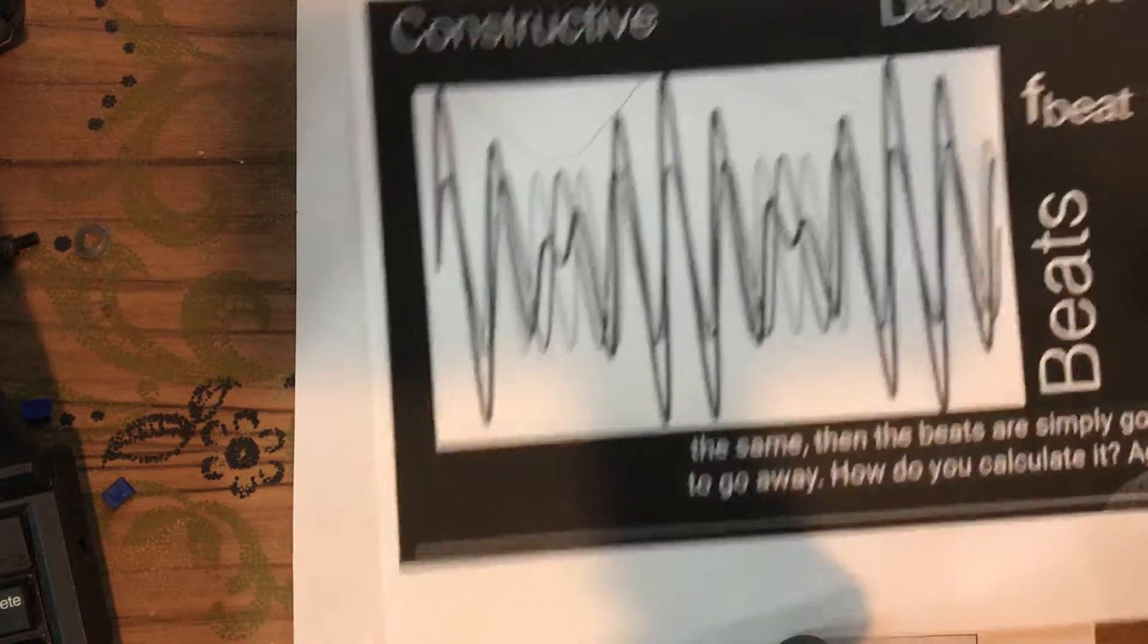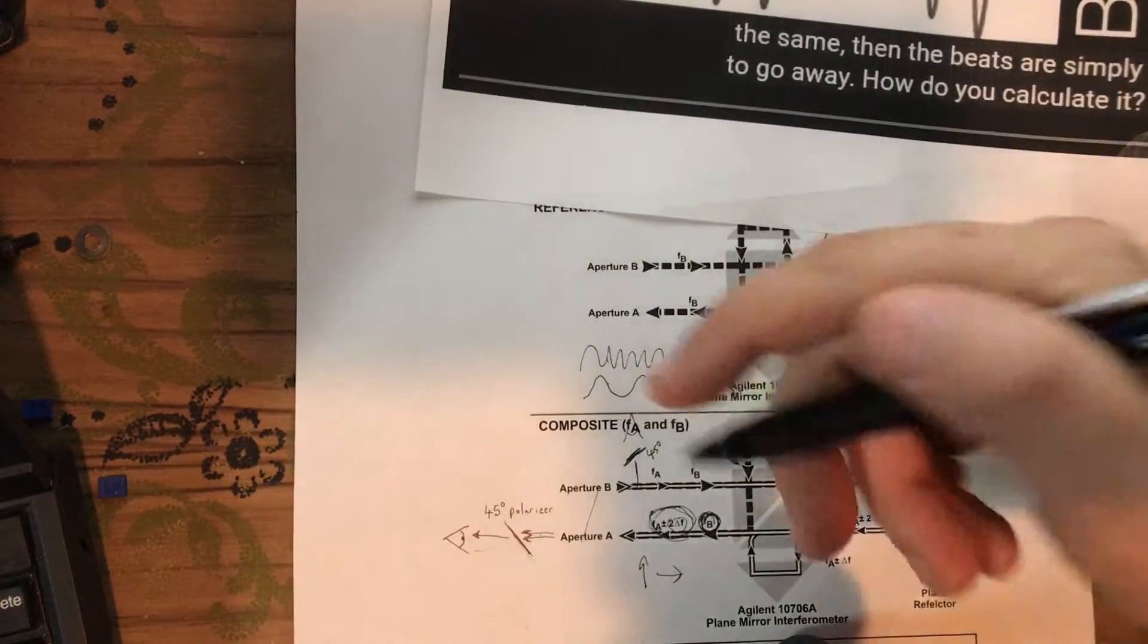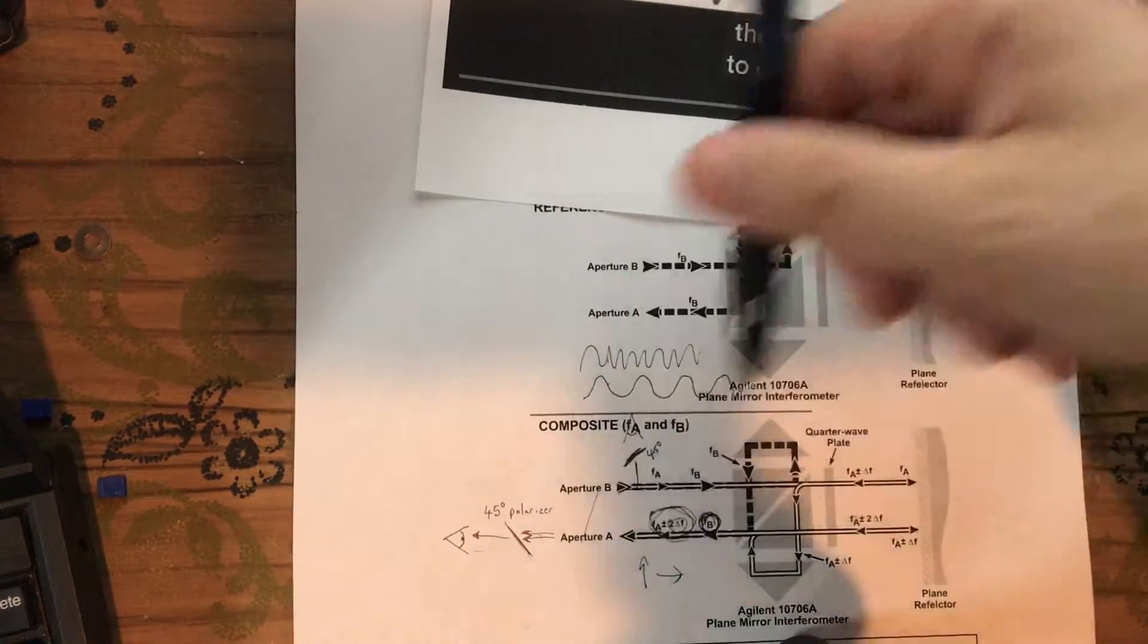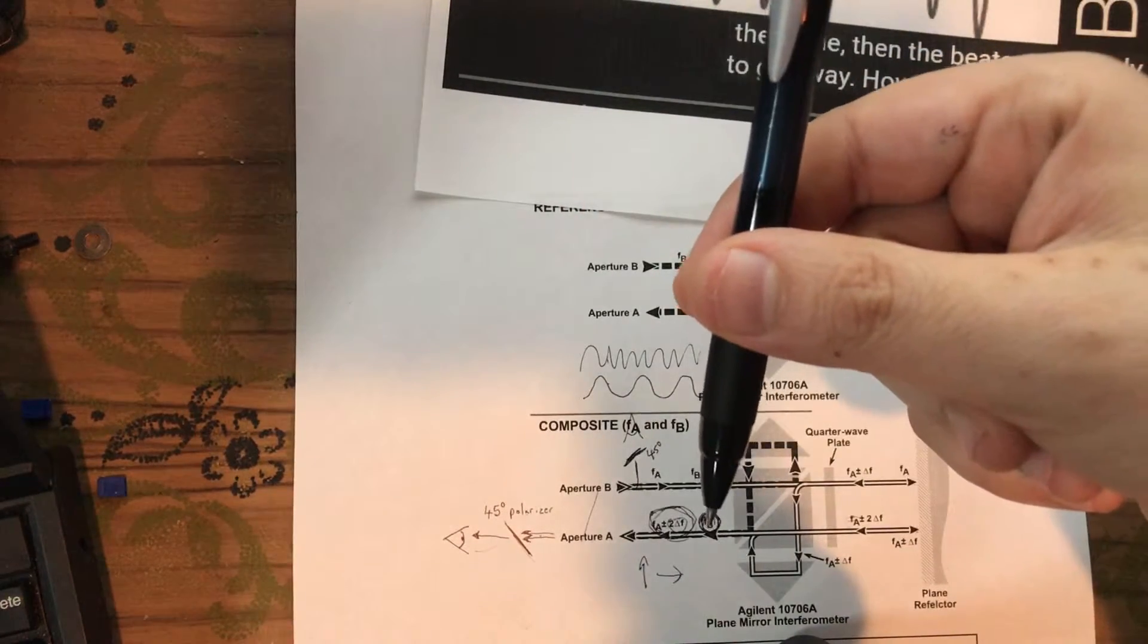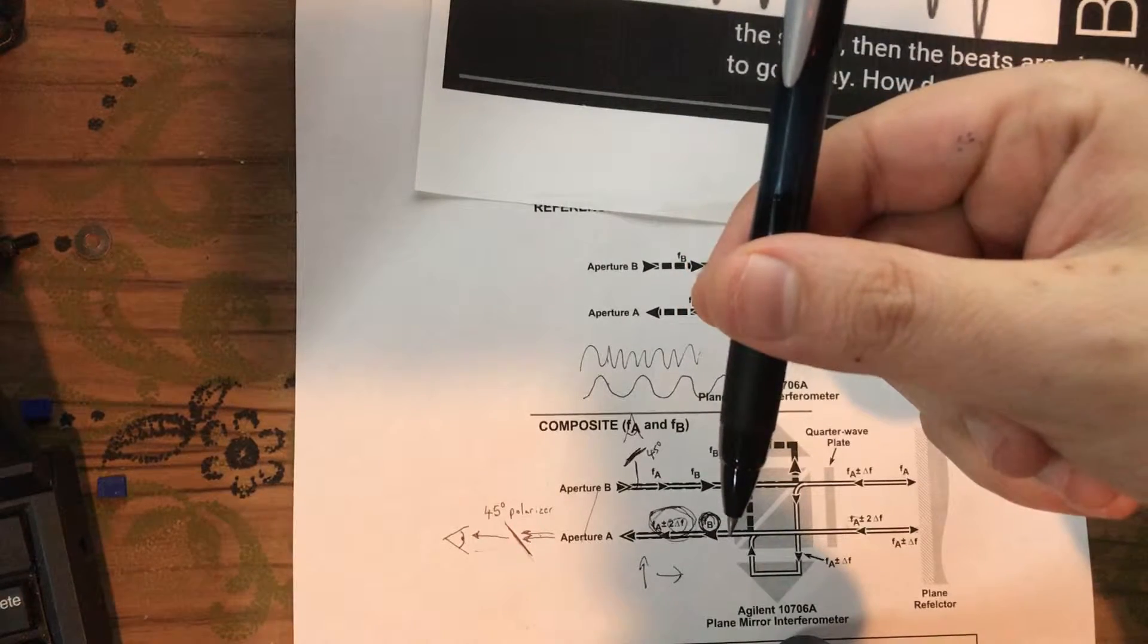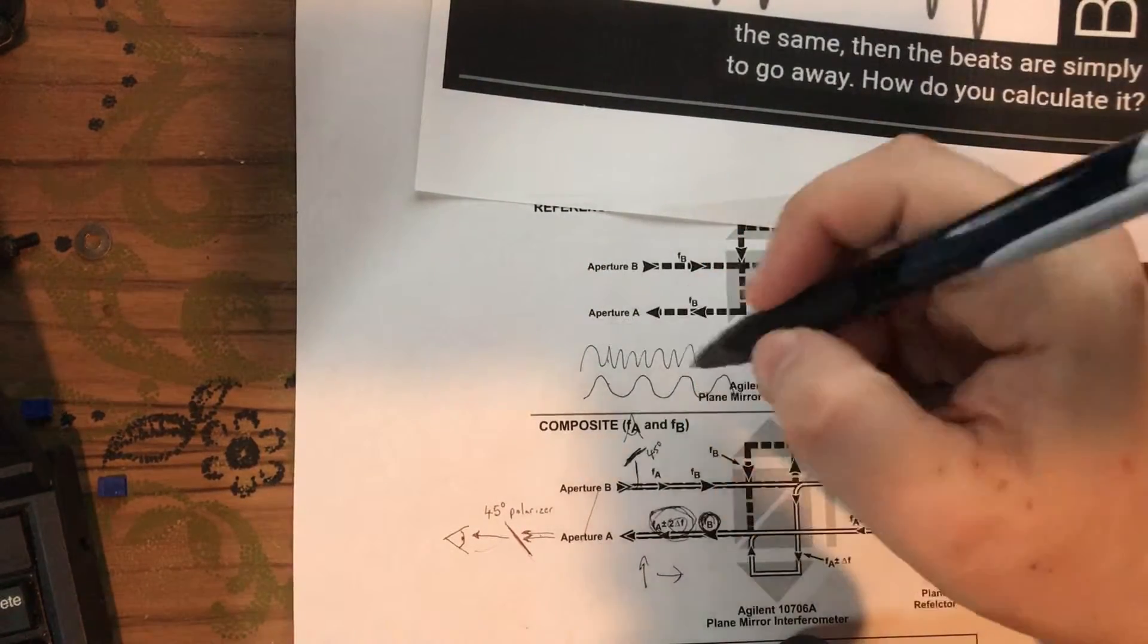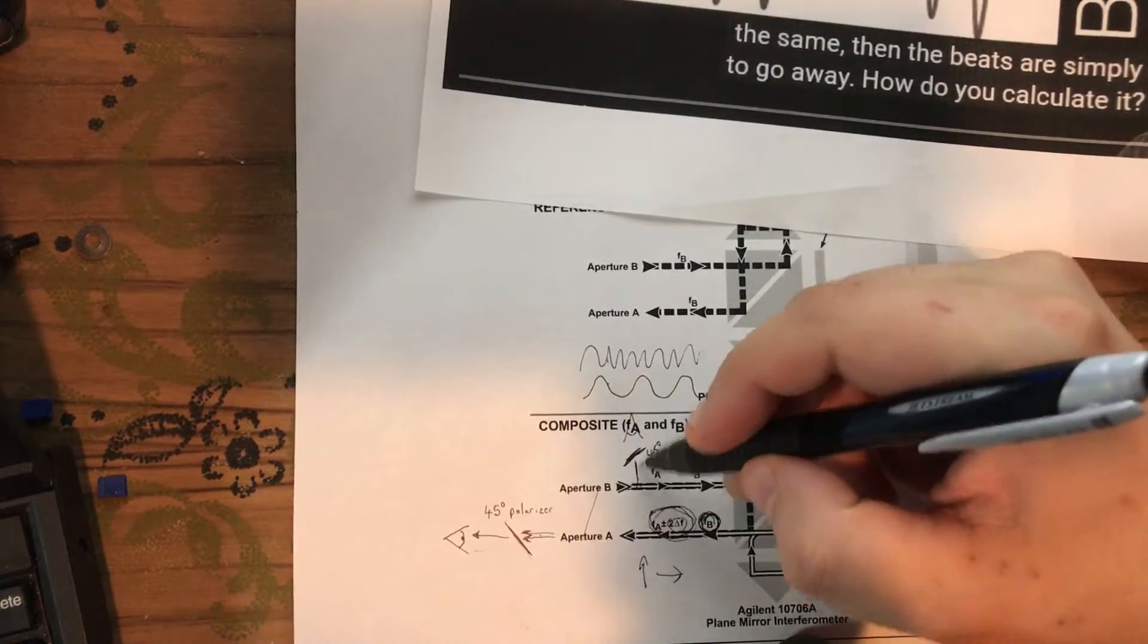That change in intensity will be just the difference between these two wavelengths, so it'll be at two megahertz plus a little bit due to the doppler shift or minus a little bit due to the doppler shift. It'll be two megahertz because that's your original difference, and then plus or minus a little bit.